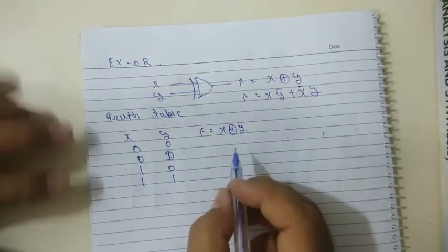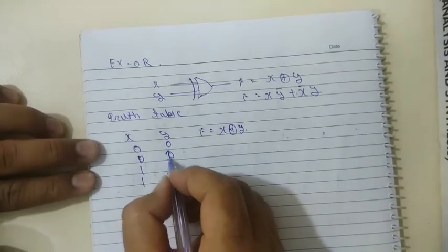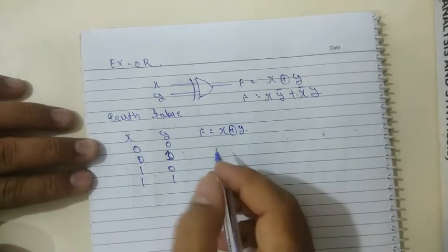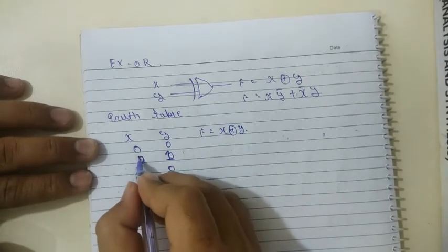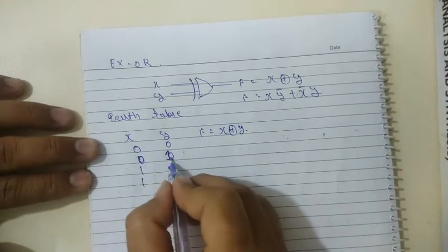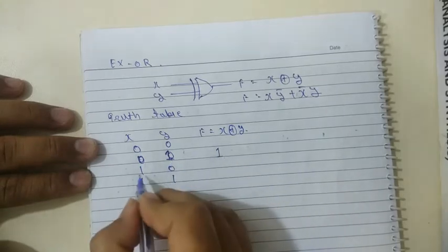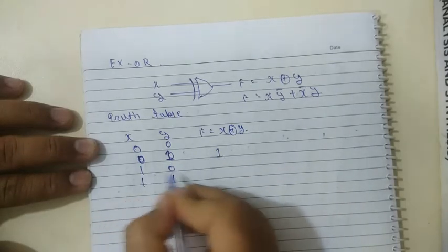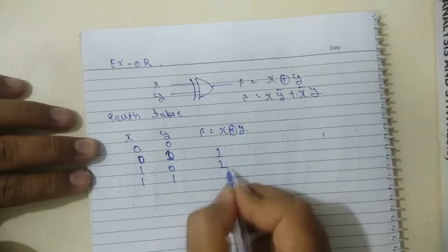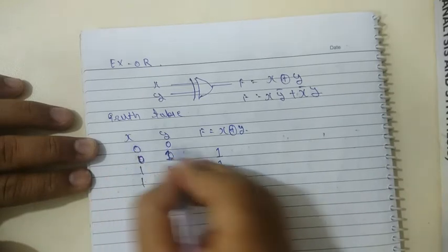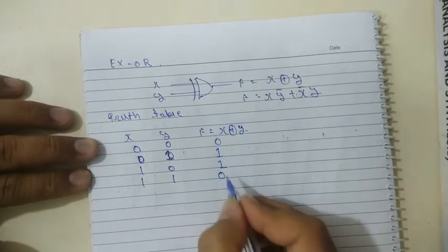The output will be 1 when both inputs are different. If one input is 0 and another is 1, the output will be 1. If one input is 1 and another is 0, the output will also be 1. If both inputs are the same — 1,1 or 0,0 — then the output will be 0.